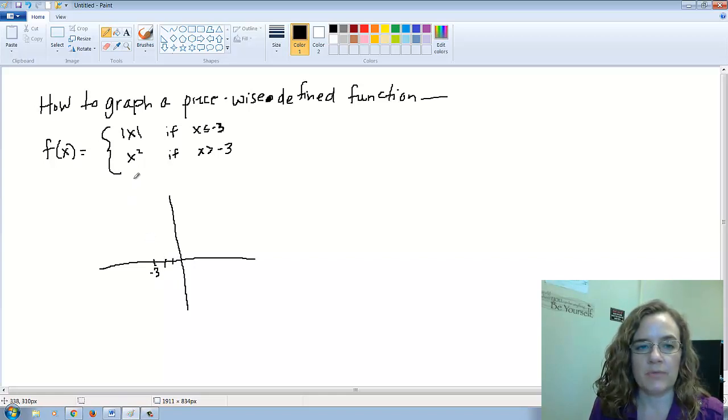This is for everything to the left of negative 3. We're using y equals absolute value of x. So if I make a table of values for this section, this is going to be negative 3 goes in, I'm gonna get out positive 3.